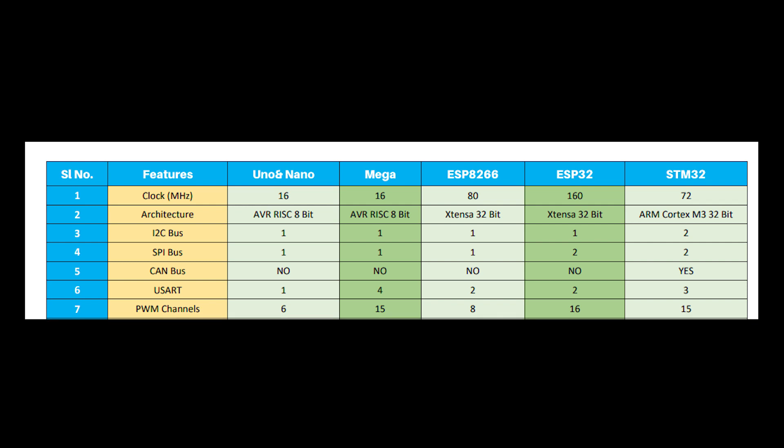PWM output is an essential feature of a microcontroller. Uno and Nano have 6 PWM channels, Mega has 15, ESP8266 has 8, ESP32 has 16, and STM32 has 15 PWM channels.